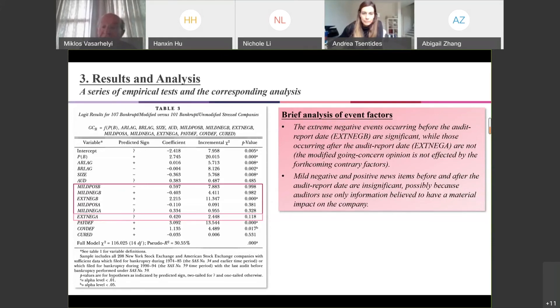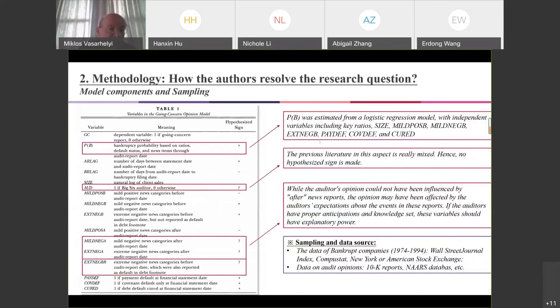Also, it's interesting that when we look at positive news, positive events, and mild positive events, we can see that the effects of these variables are not significant. Possibly because auditors are conservative and they use only information believed to have a material impact on the company, like the extremely negative news. So finally, the author did additional analysis. It added a variable which represents the default-related Wall Street Journal news events which were also reported in the footnotes.